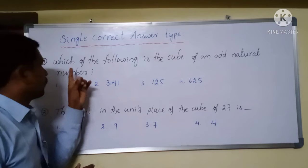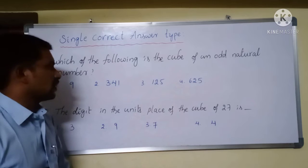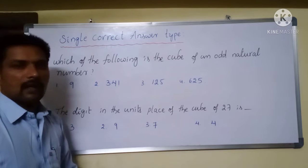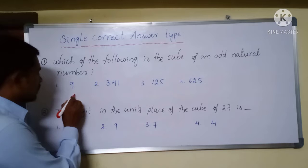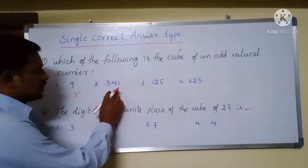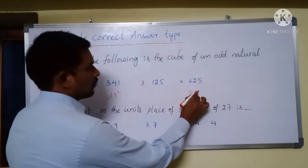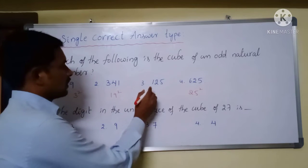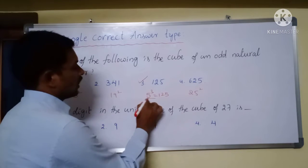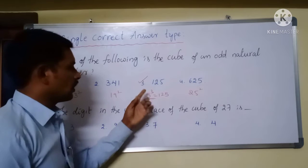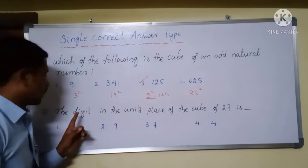First problem: which of the following is the cube of an odd natural number? If you observe all the options — the third option, 5 cube is equal to 125, is the correct answer.